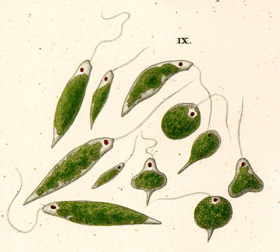Euglenids, euglenoids, or euglenophytes, formerly euglenida, euglenoida (ICZN), or euglenophycii (ICBN), are one of the best-known groups of flagellates, which are excavate eukaryotes of the phylum Euglenophyta, and their cell structure is typical of that group.